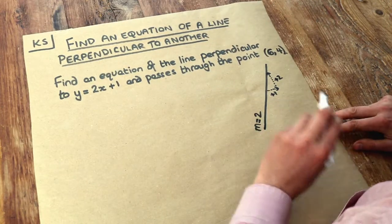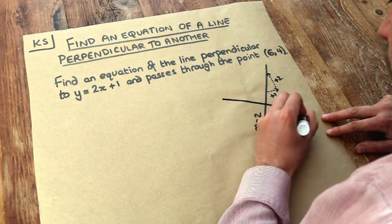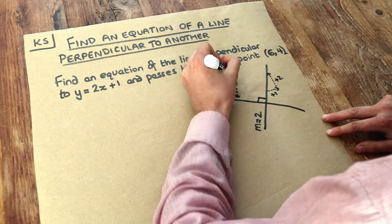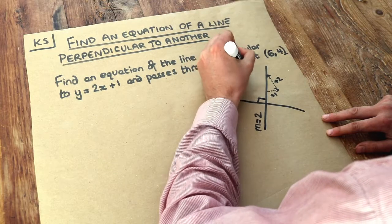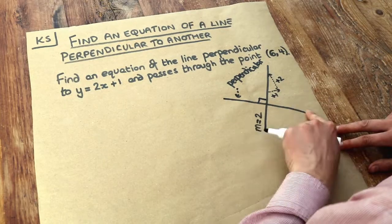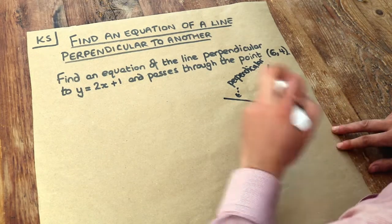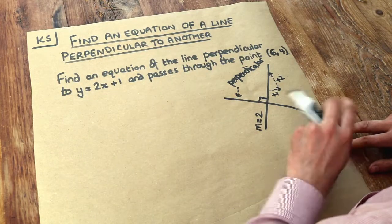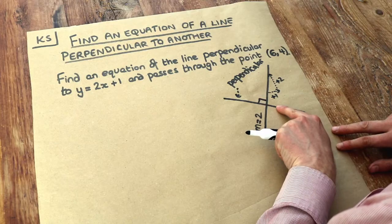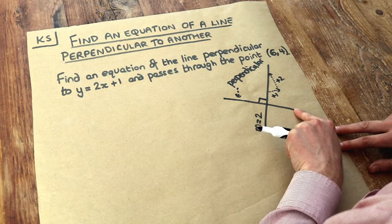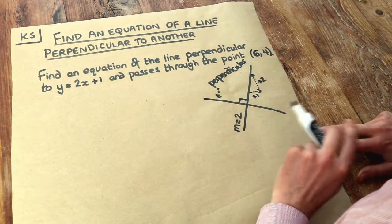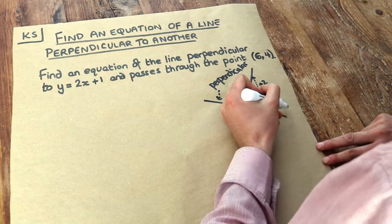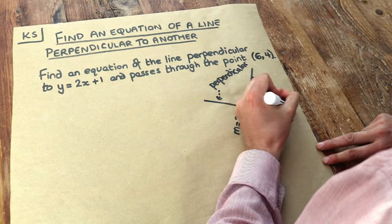Now if we had a line that was perpendicular to that, it means it's at right angles to the other line. So this would be a perpendicular line. Perpendicular means at right angles. Well what do we know about the gradient of this particular line? Well we first note that it's negative because it's going downhill. If a line is going downhill it's going to have a negative gradient because each time x increases by 1 the y value is actually decreasing.